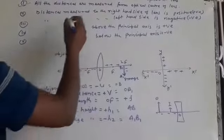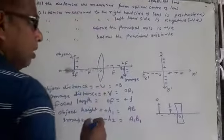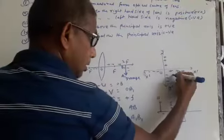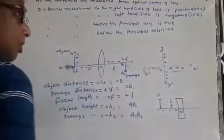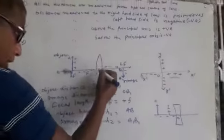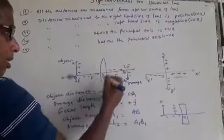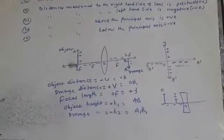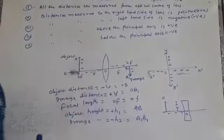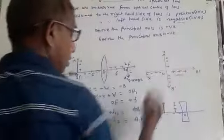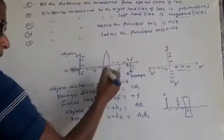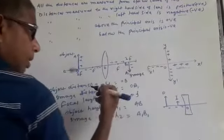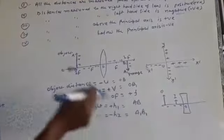Second convention: distances measured to the right hand side of the lens are positive. You are seeing in the graph, we have to measure this distance to the right hand side from the origin, so it is given here with a plus sign. Third convention: distances measured to the left hand side are negative. This means from the optical center, if we go to the left hand side, that is negative, just like the graph.